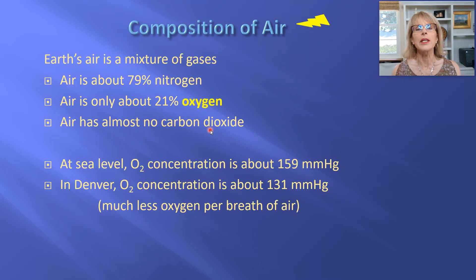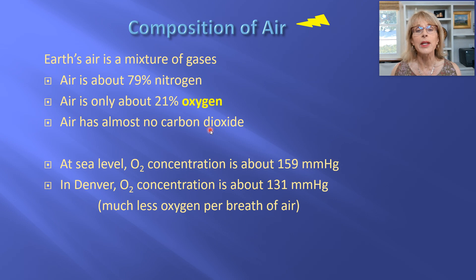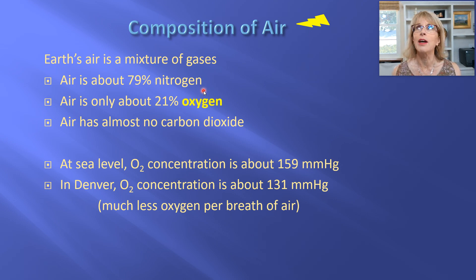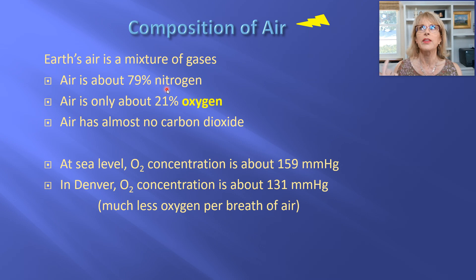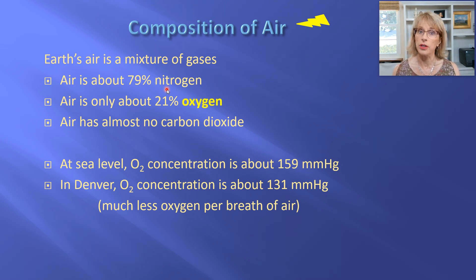It's important to recognize that the air around us is not oxygen. It has oxygen in it, but it is actually mostly nitrogen. The answer to that study guide question — what is most of the air around you? — is nitrogen. The air around us is about 79 to 80 percent nitrogen and only about 21 percent oxygen.